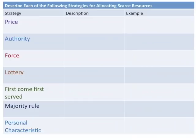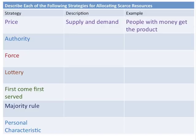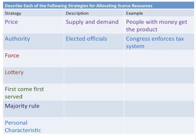Because of scarcity, there are various strategies for allocating scarce resources. The first is price — simply supply and demand: who has the money gets the stuff. The second is authority — in a democratic republic, elected government officials such as Congress determine who gets the stuff by creating tax systems and redistributing income or providing social programs and safety nets.